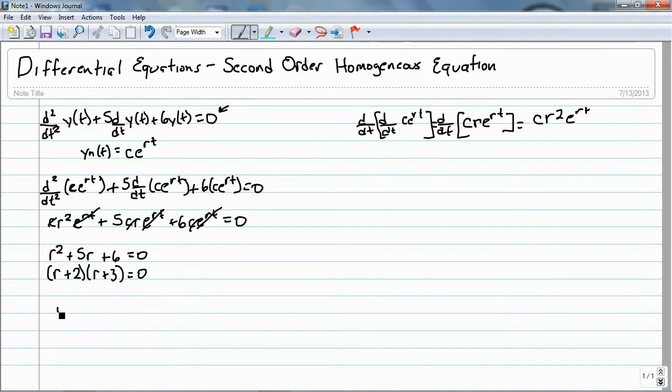So, I have two roots for this differential equation. And this makes sense. If I put this into my homogeneous solution, I'm going to get one term that's going to have the first root. And I'm going to have a second term with the second root.